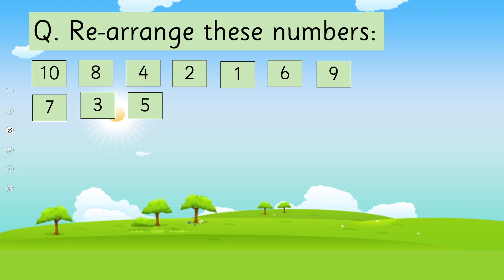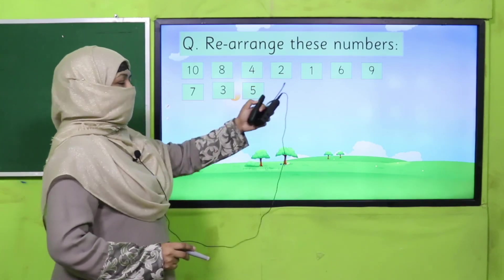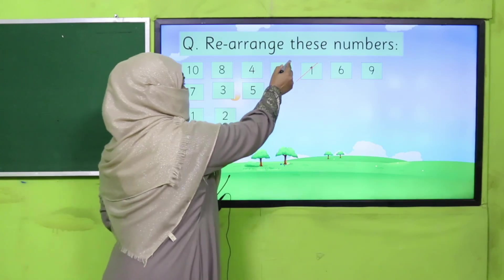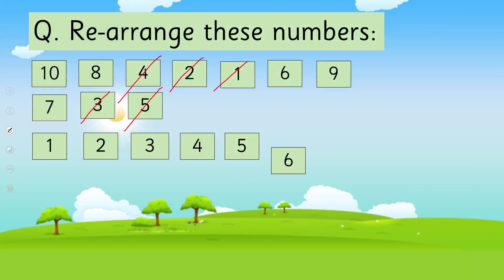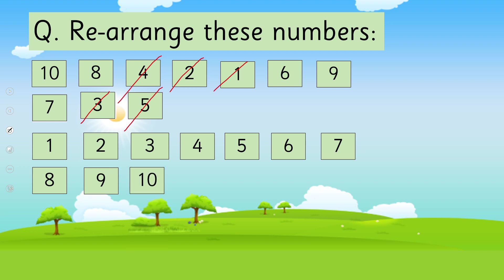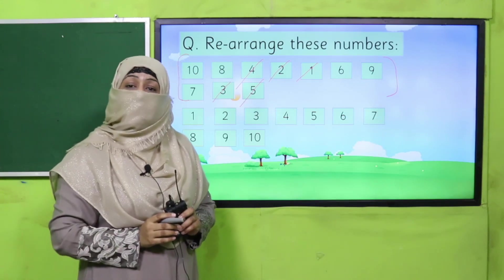If we look at these numbers — 10, 8, 4 — they are not arranged in order. If I ask you to rearrange these numbers, how will you arrange them? The number which comes first, you will write it first, then the second, and so on. So what comes first? 1, 2, 3, 4, 5, 6, 7, 8, 9, 10. Now this is the right arrangement. We can say these numbers are arranged in order. Likewise, when you are given a group of words that are not arranged, how do we arrange them? Alphabetically!